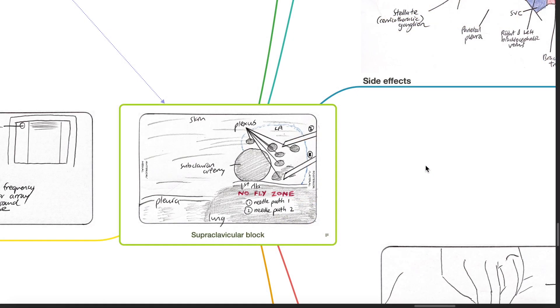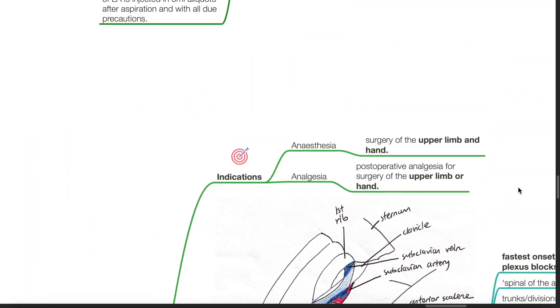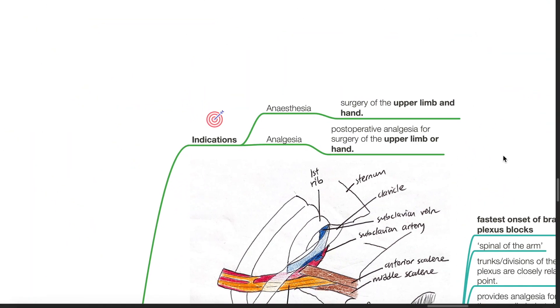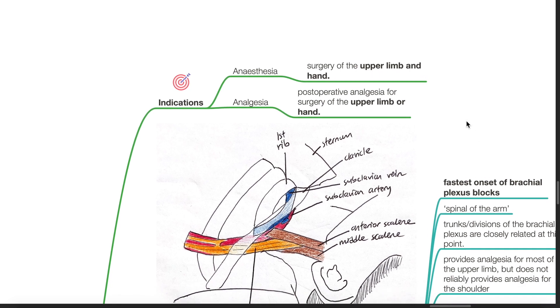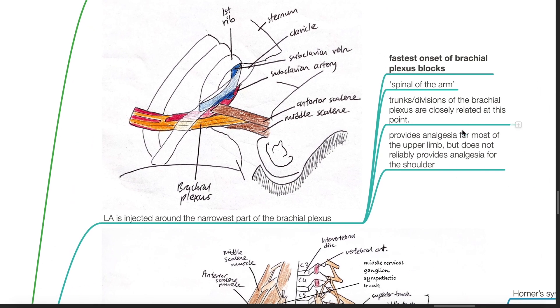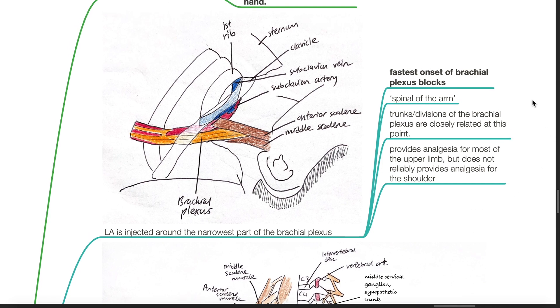Supraclavicular brachial plexus block. Indications include anesthesia for surgery of the upper limb and hand, or post-operative analgesia for surgery of the upper limb or hand. Local anesthetic is injected around the narrowest part of the brachial plexus. It has the fastest onset of the brachial plexus blocks and is also known as the spinal of the arm. Trunks and divisions of the brachial plexus are closely related at this point. It provides analgesia for most of the upper limb but does not reliably provide analgesia for the shoulder.